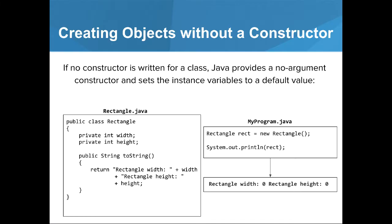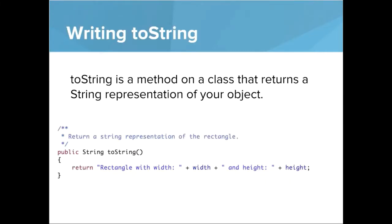If the instance variables have not already been initialized, Java will initialize them with default values. In this example, the Rectangle.java class does not have a constructor. When we create a new rectangle object in MyProgram.java, we are able to use the no-argument constructor even though the class does not have one written. When we print out the values of width and height, we can see they have been initialized to zero by Java. And in all of our classes, we'll have a toString — a method that returns a String representation of your object, which is what gets printed when we call println.